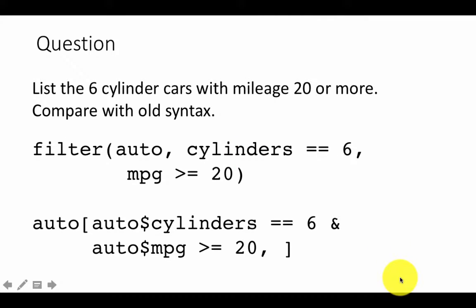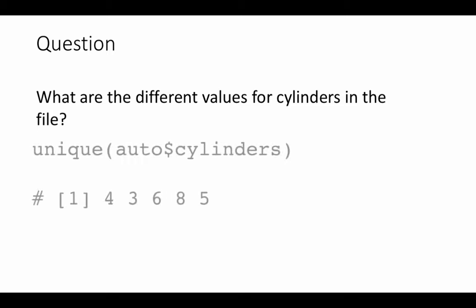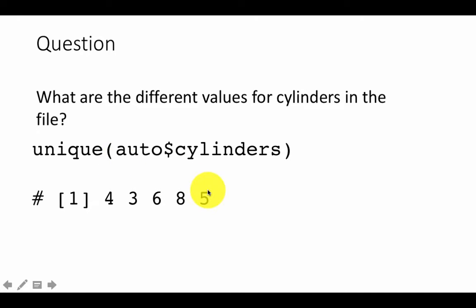They accomplish exactly the same thing but dplyr is a lot cleaner. Now we ask: what are the different values for cylinders in the file? You've likely got four, five, six, and eight cylinders. To print those out we can use unique(auto$cylinders) — this has nothing to do with dplyr but it's something useful to know.